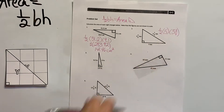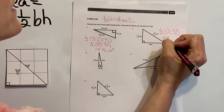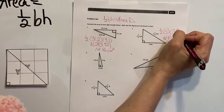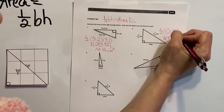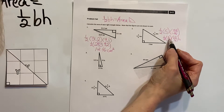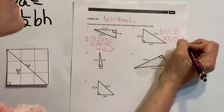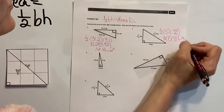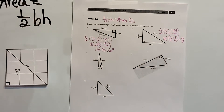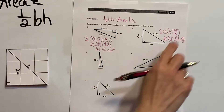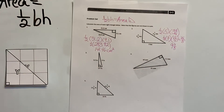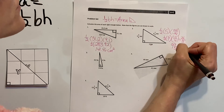We need to change the mixed number into an improper fraction. We write 5 as 5 over 1, and the other value becomes 15 fourths. Multiplying across gives us 75 over 8. Since 8 times 9 is 72, we get 9 remainder 3, so the answer is 9 and 3 eighths. The measurement is kilometers squared.